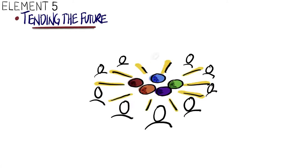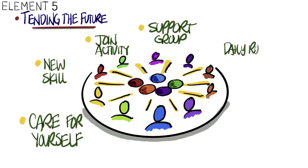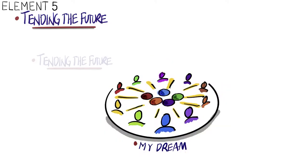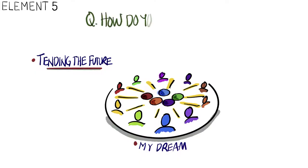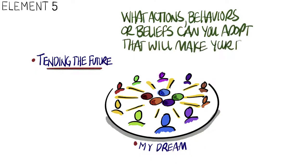Element five is tending the future. Your life will be difficult to direct if you are not intentionally finding ways to care for yourself along the journey. Acquire a new skill, join an activity or support group, establish daily routines for health and wellness. Your future will not be yours without actively reaching for it. Here are some questions for discussion: How do you define success? What actions, behaviors, or beliefs can you adopt that will make your future a success?